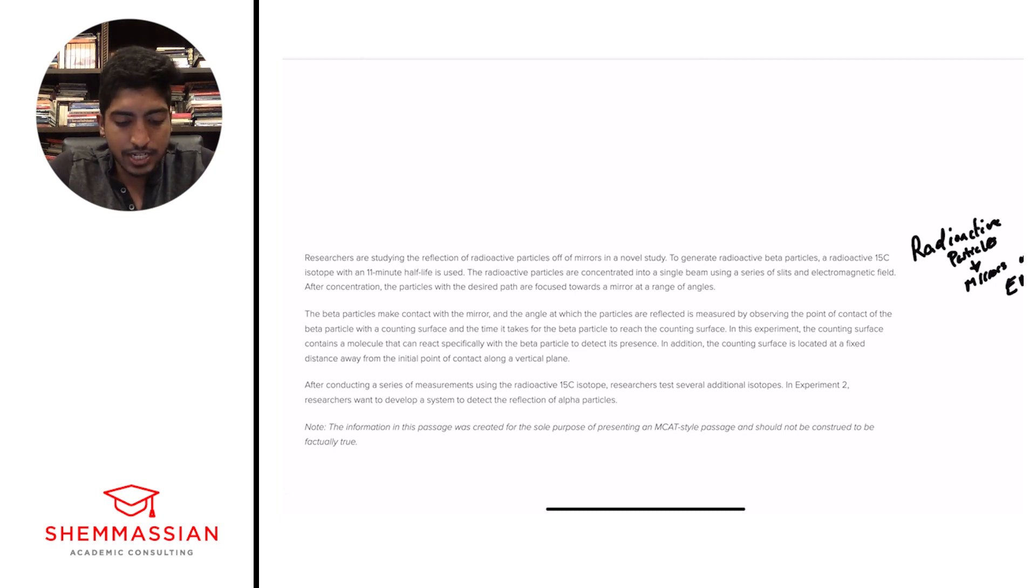The beta particles make contact with the mirror, and the angle at which the particles are reflected is measured by observing the point of contact of the beta particle with a counting surface and the time it takes for the beta particle to reach the counting surface. In this experiment, the counting surface contains a molecule that can react specifically with the beta particle to detect its presence. In addition, the counting surface is located at a fixed distance away from the initial point of contact along a vertical plane. Alright, so again, big picture question, what's happening? And here, all we're doing is beta particle measurements, right?